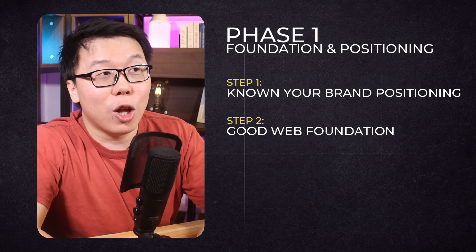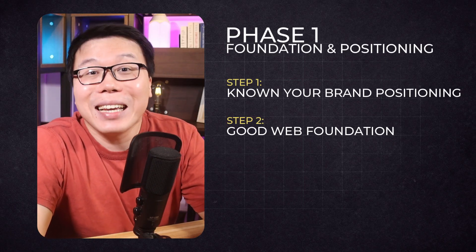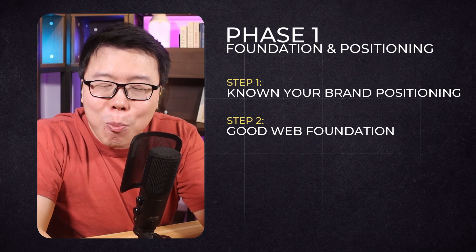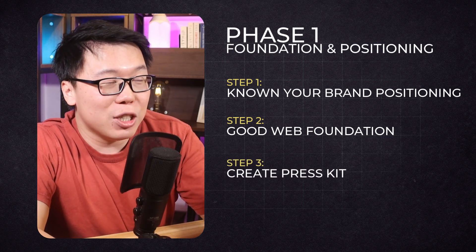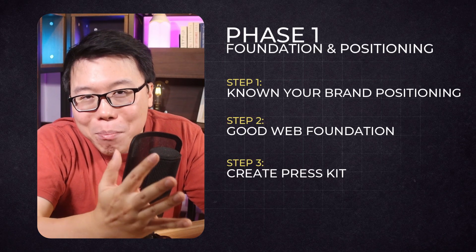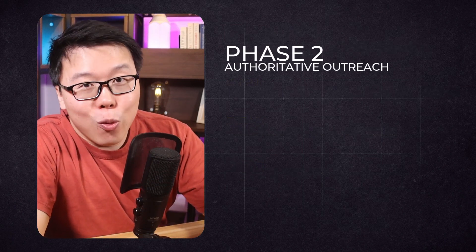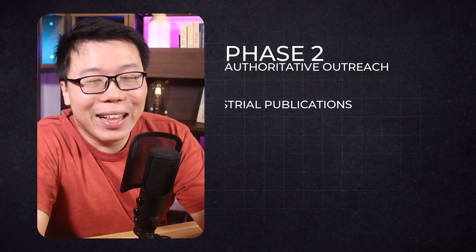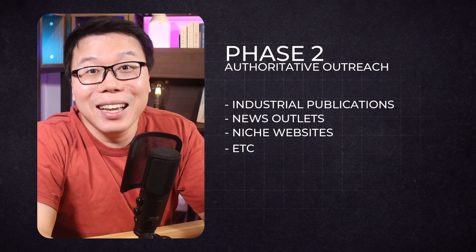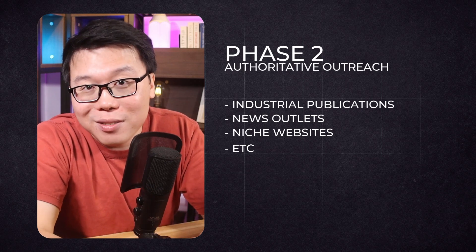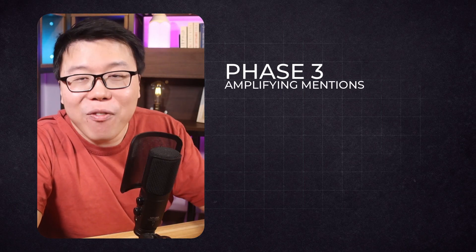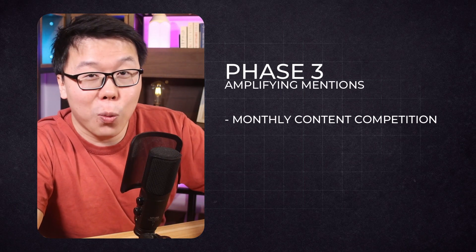Have a good website foundation with a lot of helpful content about your product and how it can solve problems. This can help with branded searches in the long run, such as 'Rank Math schema markup' or 'Rank Math voice search.' You also need a simple press kit that includes a short paragraph about your business, a professional logo, a brief founder bio, downloadable assets, and a consistent brand image before reaching out to others. Then phase two is about outreach — finding authoritative sites that are not direct competitors, like industry publications, news outlets, niche websites. Don't just ask to be mentioned; offer something useful like unique insights, data, or expert commentary through case studies or guest posts. That is the push technique. You can implement pull techniques as well, which goes to phase three: amplifying mentions, like holding a money competition where the best content wins a certain amount of money.